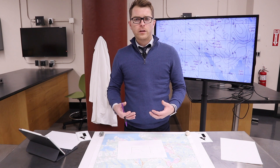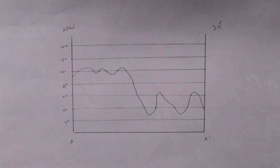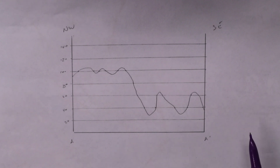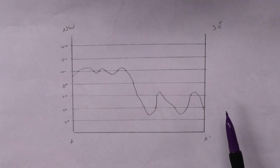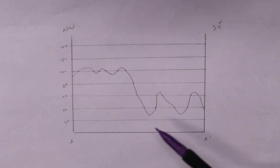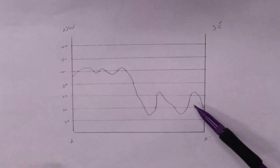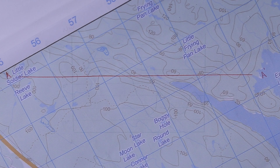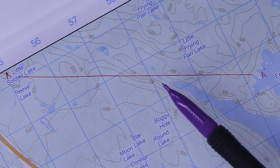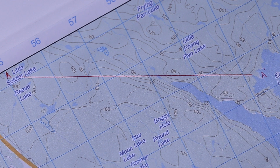Once I get all the lines connected, the topographic profile is done. As you can see, it's clear that the elevation increases as you move along the line of interest from the southeast to the northwest. We also have these two valleys here, which might be river valleys, and sure enough when we look at the map we can see that two rivers intersect our line of interest.